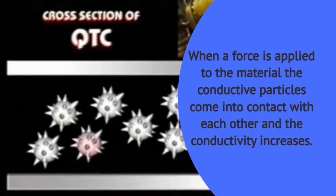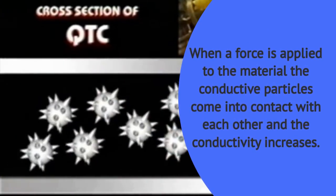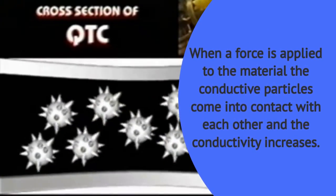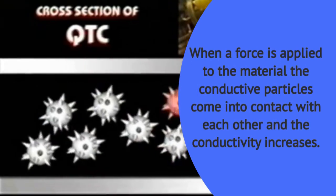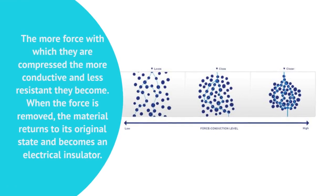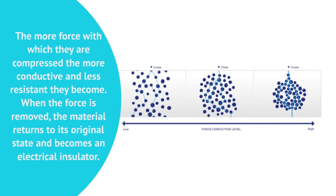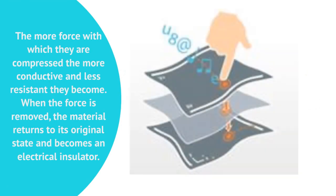When a force is applied to a material, the conductive parts come into contact with each other and the conductivity increases. The more force with which they are compressed, the more conductive and less resistance they become. When the force is removed, the material returns to its original state and becomes an electrical insulator.